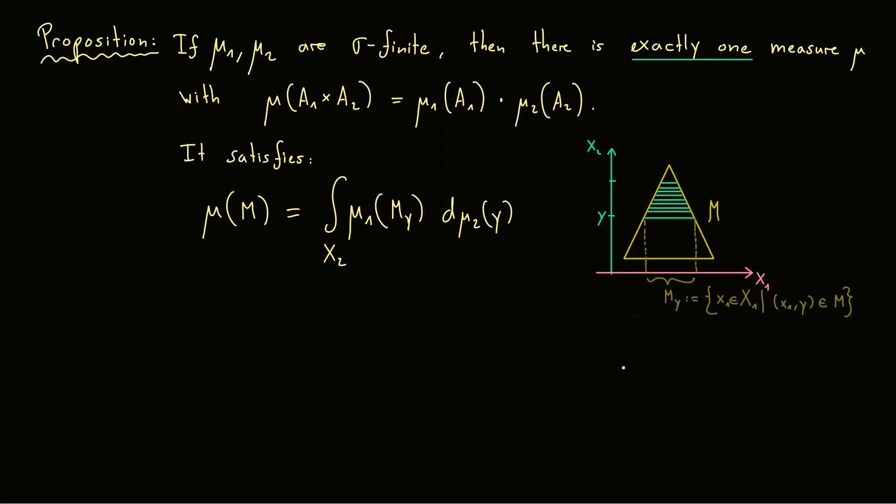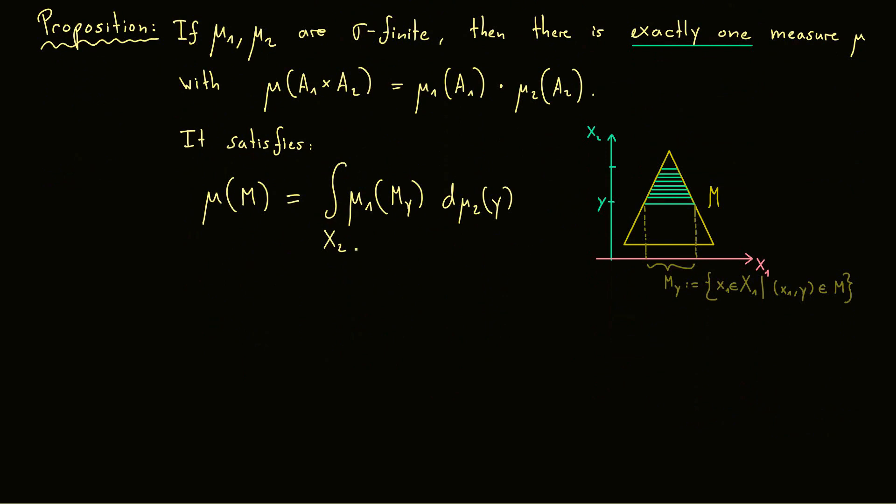Okay and now the only thing that is missing here is that you have the same formula just with switched roles. In the visualization this means you can draw the line parallel to the y axis or the x2 axis here and then sum them up in the integration. So you switch the roles and we get the formula here with x1, mu2, M_x and integration over mu1 x. And the same way as before we can now define M index x as all the points that lie on the y axis so x2 in capital X2 that fulfill x with x2 lies in M.